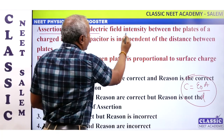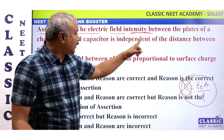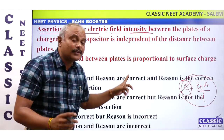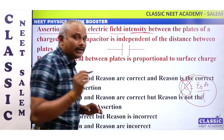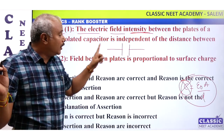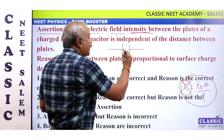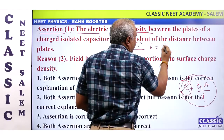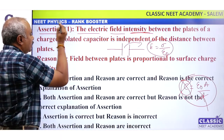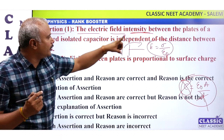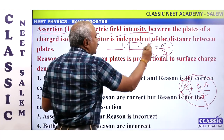The electric field intensity — not capacitance — the electric field intensity between the plates of the charged isolated capacitor is independent of the distance between the plates. So this is correct.